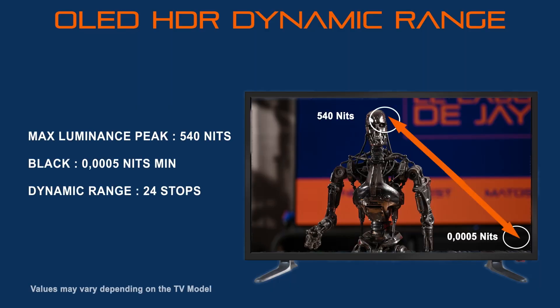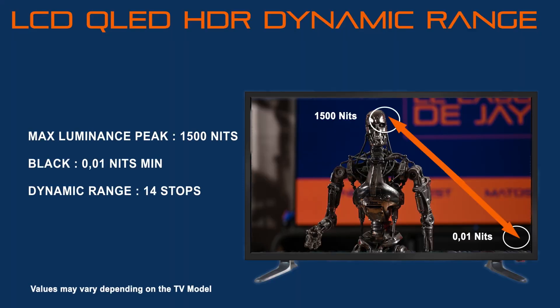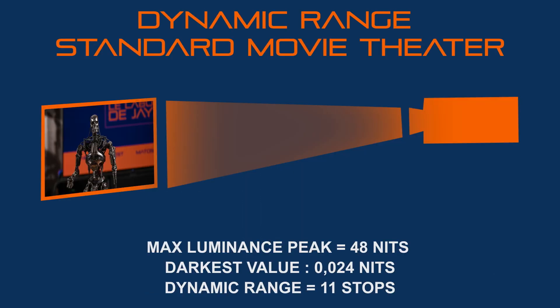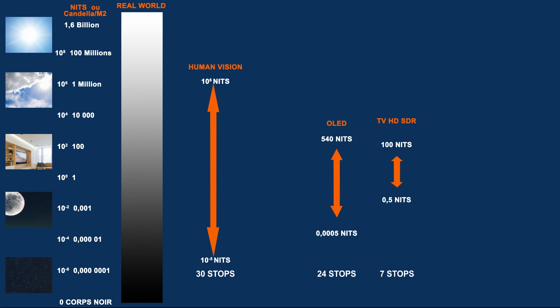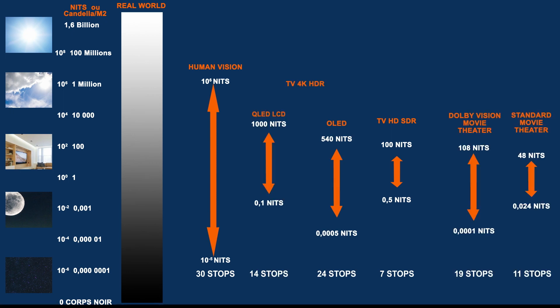An OLED TV set can display a light intensity of around 540 nits on average — sometimes 600 or 700 — but rarely more than 1000 nits. On the other hand, its black level can go as low as 0.005 nits, the darkest black on the consumer market. LCD QLED TVs can display values above 1500 nits, but their black level is 0.01 nits. A standard movie theater peaks at 48 nits with a black level of 0.024 nits. A Dolby Vision Theater can display a maximum of 108 nits and go down to 0.0001 nits — the best dynamic range in projection today, around 19 stops.